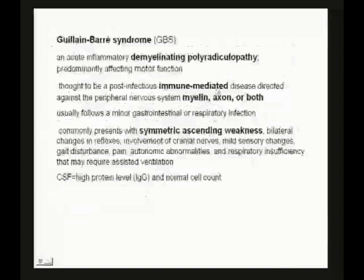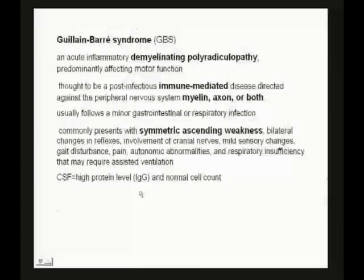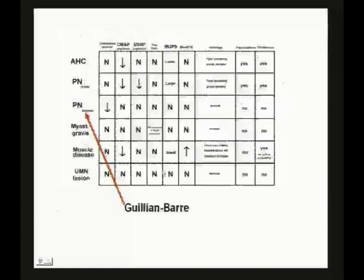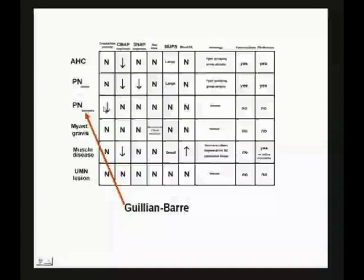Guillain-Barré: immune-mediated symmetric ascending weakness. It can affect the myelin, the axon, or both. IgG levels are high in the CSF. Primarily a demyelinating problem — though it can be axonal or combined — and mostly motor, though the most popular presentation is pure motor. Conduction velocity goes down — that makes sense. There's no re-innervation, no problems with MUPs, and no problems with CK.